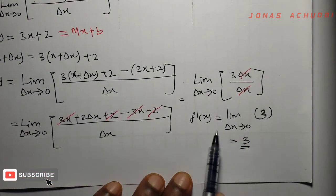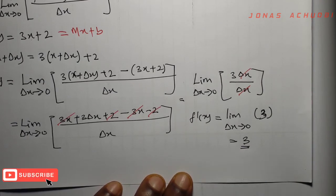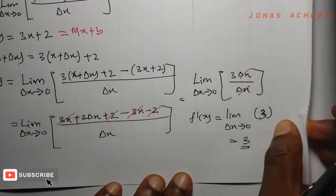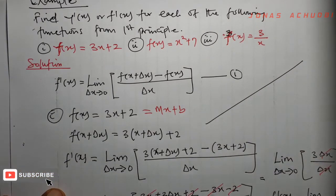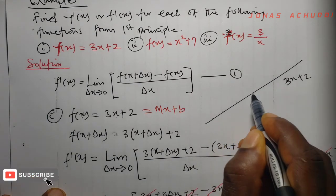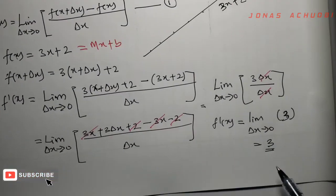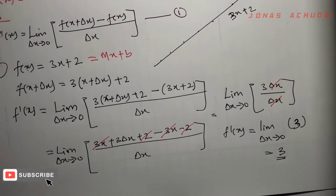Now, after using the first principle, the value we have here is just a constant and has no variable. So this tells us already that the equation we dealt with earlier is nothing but the equation of a straight line. What this means further is that on this straight line, at every point, if you calculate the slope of such points, the slope will be nothing but 3. So what we have done is what we call differentiation from first principle.